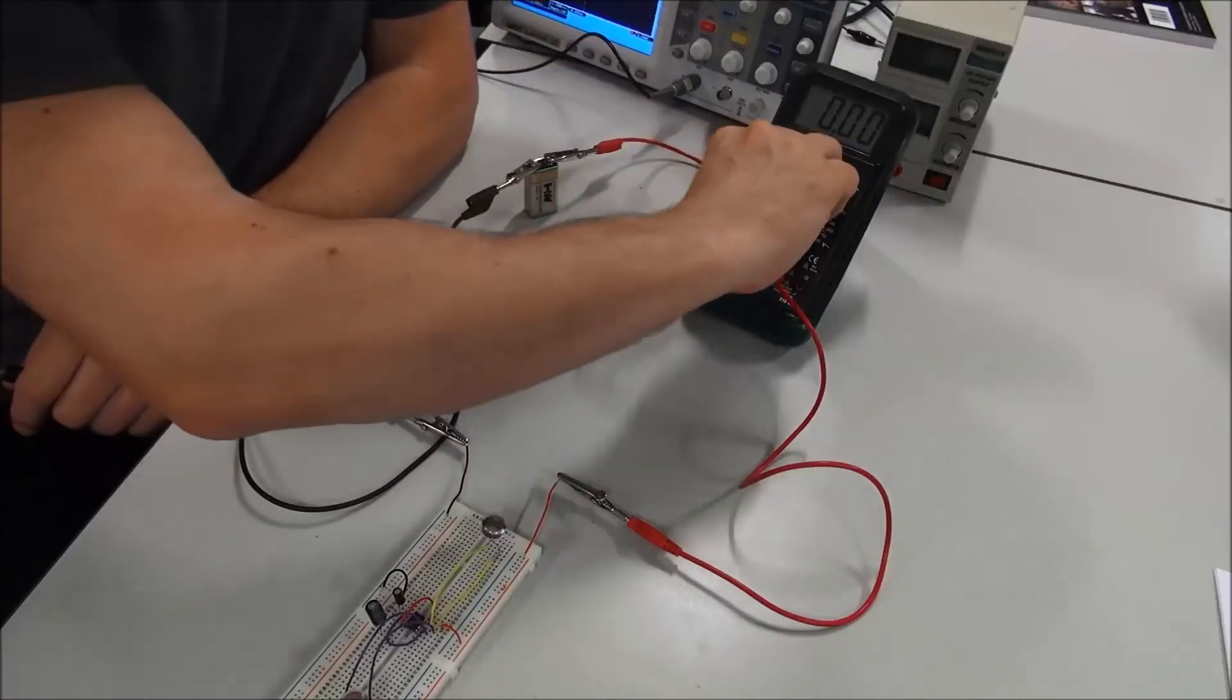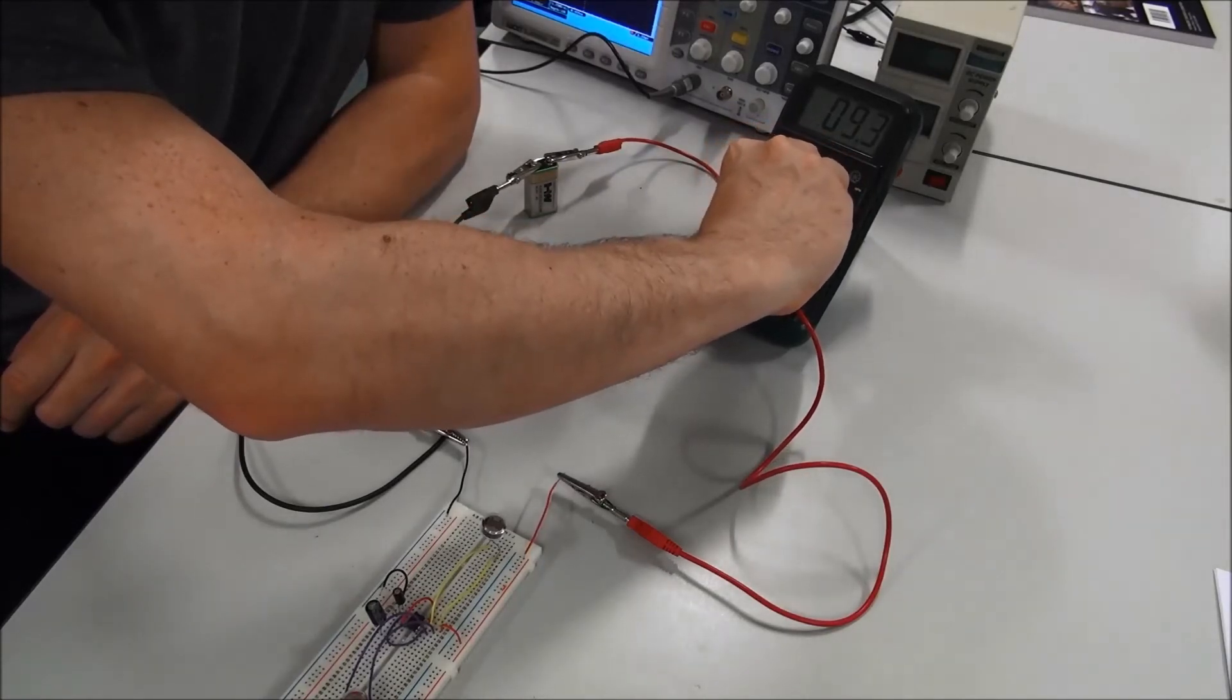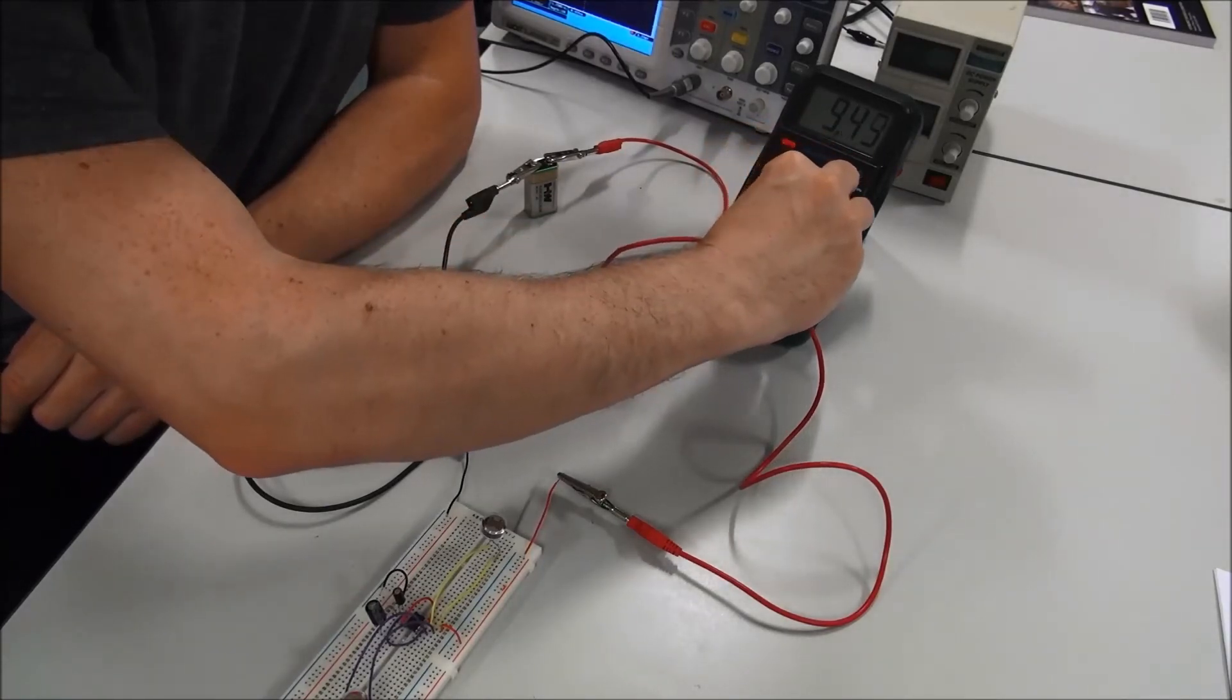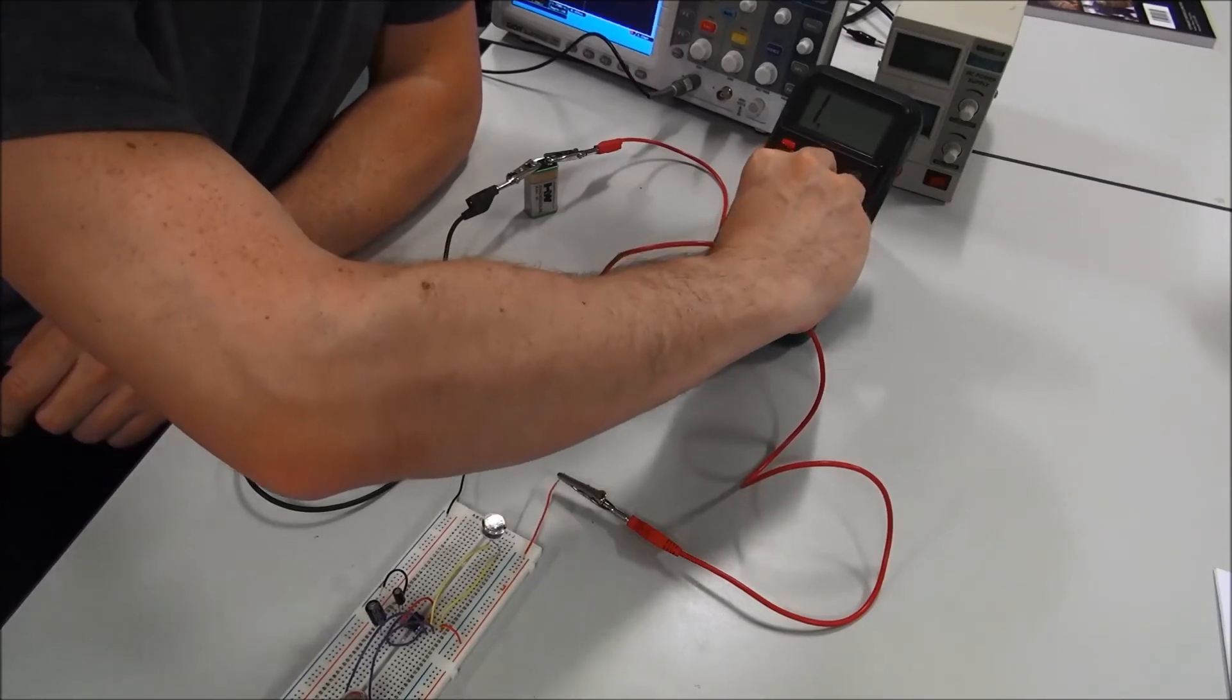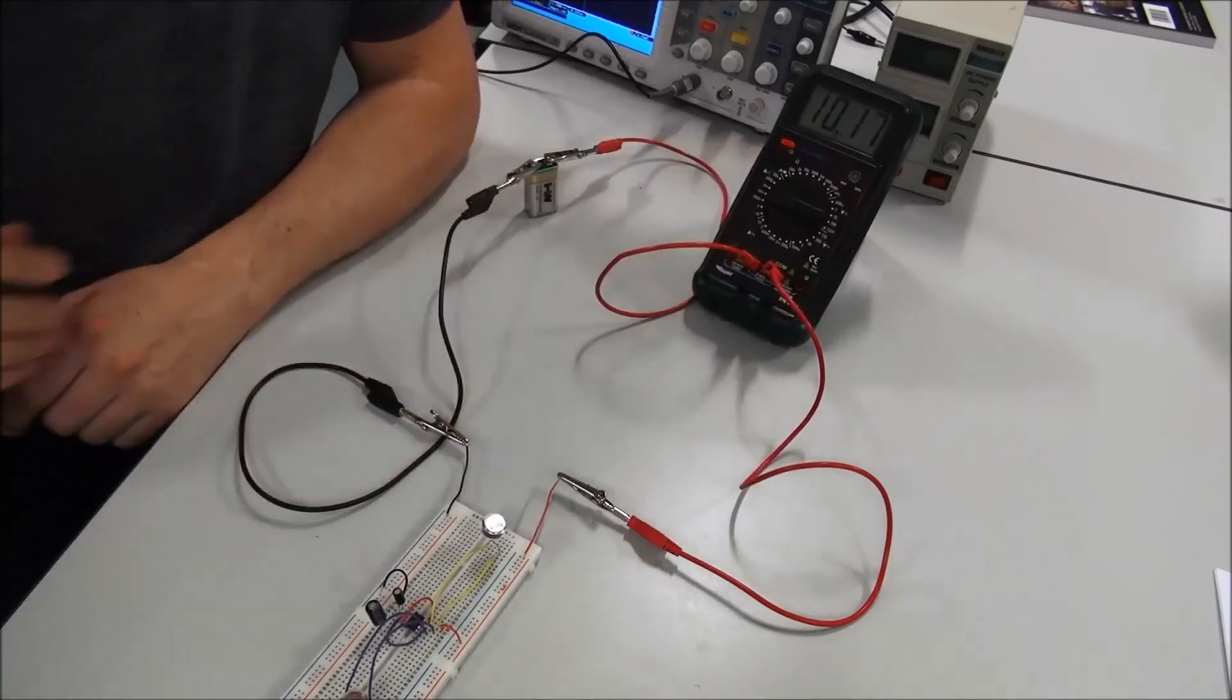You'll see as we range it down, the reading becomes more and more accurate. Same procedure as before: take it so it shows a one and back it off one, and that gives you your most accurate reading for the current drawn.